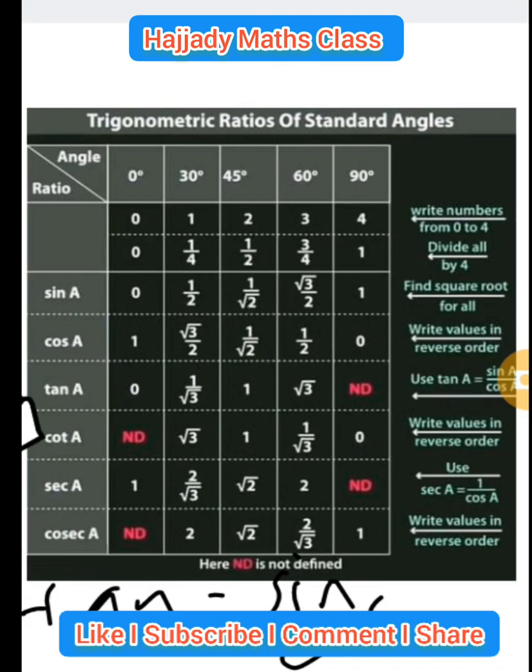Sec means 1 over cos. While cosec means 1 over sine. We can use that method to get our answer right. But using this for knowledge sake, the shortcut in getting cot is to write tan in reverse order. You can see that the tan has been written in reverse order.